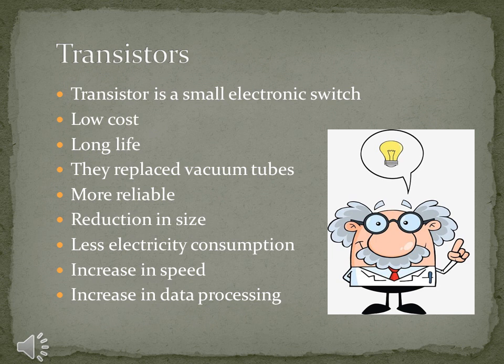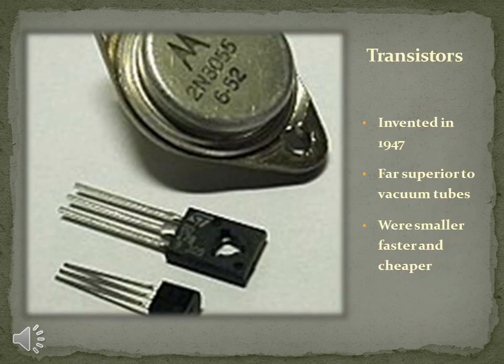The second generation of computers began with the discovery of a transistor. What is a transistor? A transistor is a small electronic switch with a very low cost and a long life. Transistors replaced vacuum tubes, increasing the reliability of computers. The size of computers was reduced significantly. They used less electricity, but computer speed and data processing capabilities were increased. In this image you can see how transistors look like. The transistors were invented in 1947 but were used in the late 1950s. It was far superior to the vacuum tube.